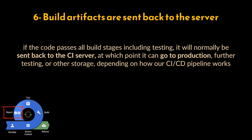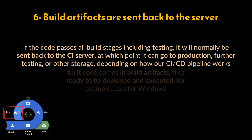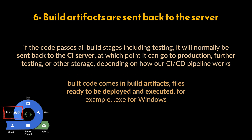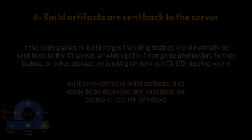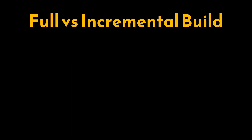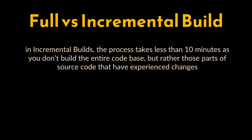Step six: build artifacts are sent back to the server. If the code passes all build stages including testing, it will normally be sent to the CI server, at which point it can go to production, further testing, or other storage depending on how your CI/CD pipeline works. Build artifacts are files ready to be deployed and executed — for example, a .exe file for Windows.